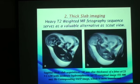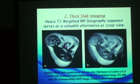There is another alternative to this scout view, called thick slab imaging. It is a heavily T2-weighted MR myelography sequence that serves as an alternative. We call it thick slab imaging because we take thick slices of 80 to 120 millimeters thickness. It gives better anatomical details; CSF is also hyperintense, and we can see the extremities of the fetus with anatomical details more accurate than the previous scout.